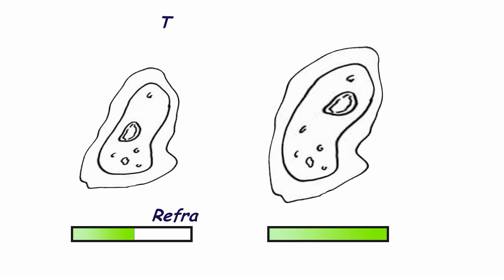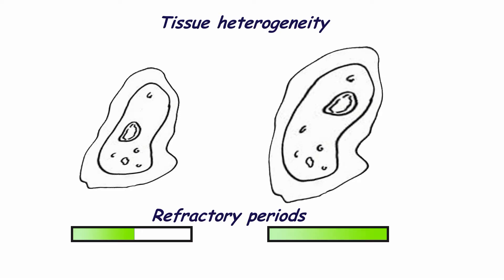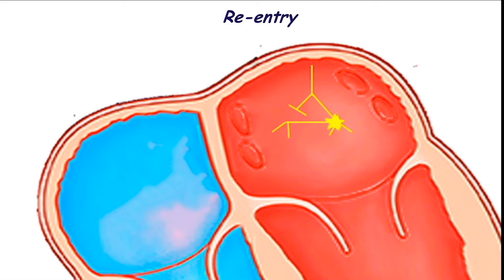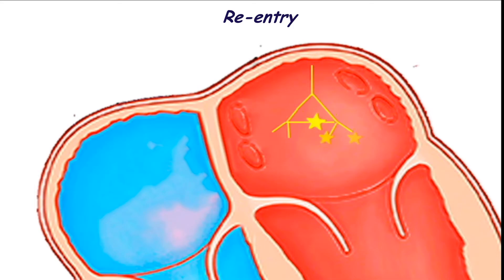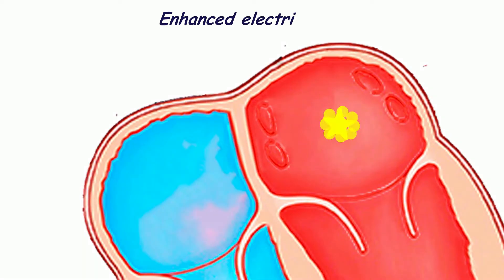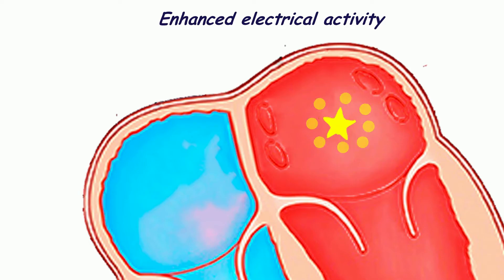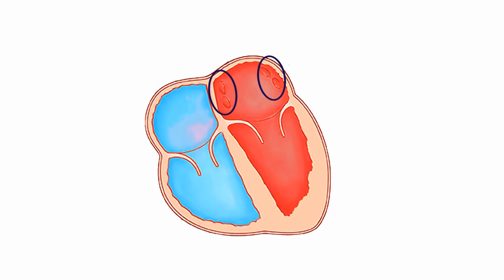Tissue heterogeneity means that atrial cells have different electrical properties, including different refractory periods. Micro re-entry develops in the atria — an impulse cannot be conducted by some fiber because its myocytes are in the refractory period, so the impulse excites atrial cells in which refractory periods have elapsed, then spreads to cells which were in the refractory period, creating a re-entry loop. Additionally, a specific area originating very frequent electric impulses in the atria may initiate atrial fibrillation.